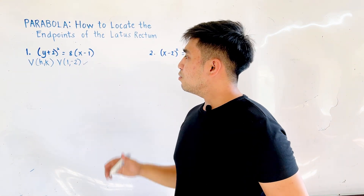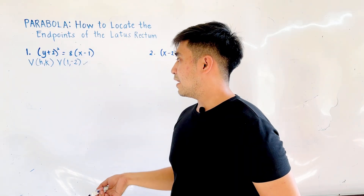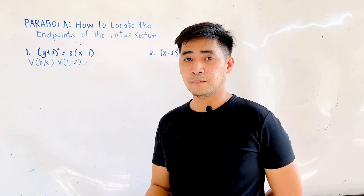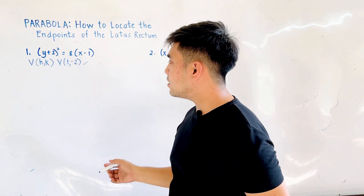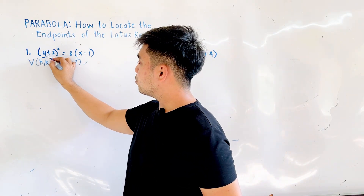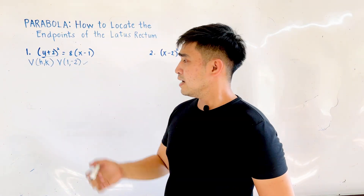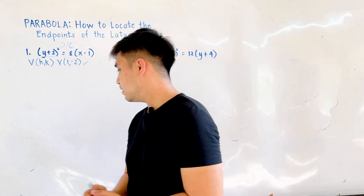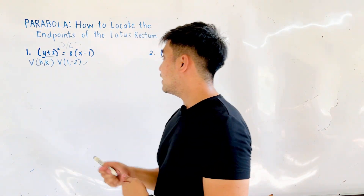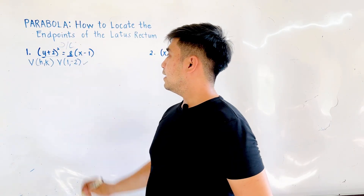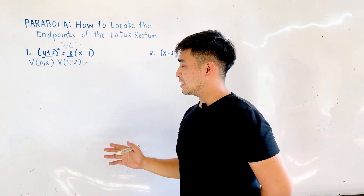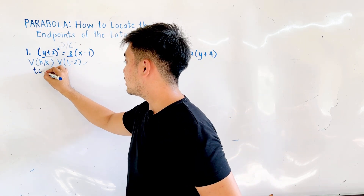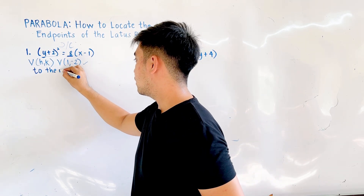Next, we need to identify the direction of the opening of the parabola. Since we have the (y minus 2) squared term, the parabola opens either to the left or to the right. Looking at the sign of the right side — since it is positive — the parabola opens to the right.